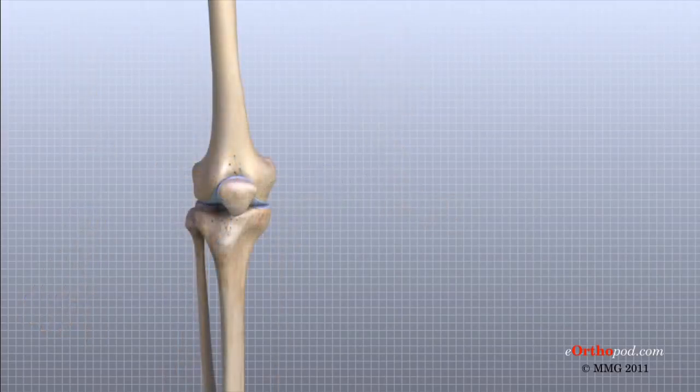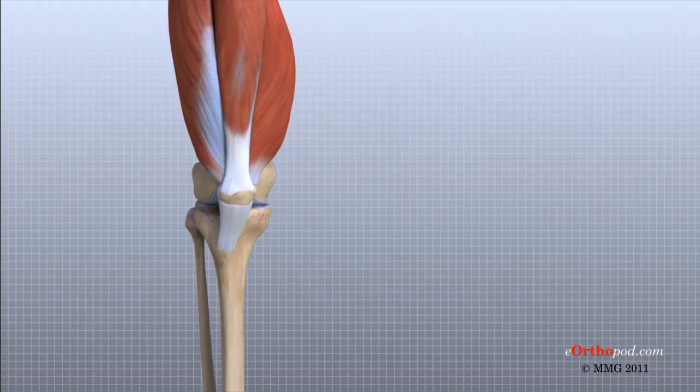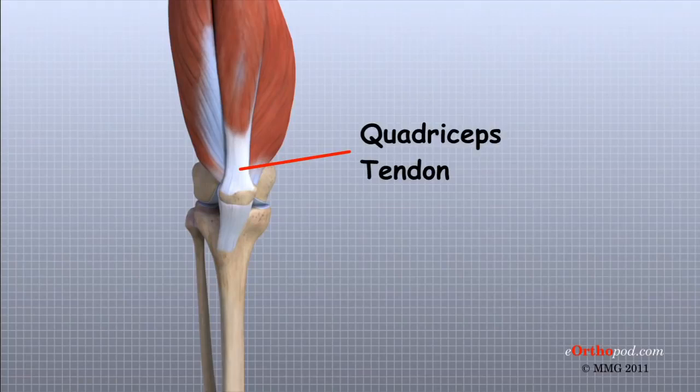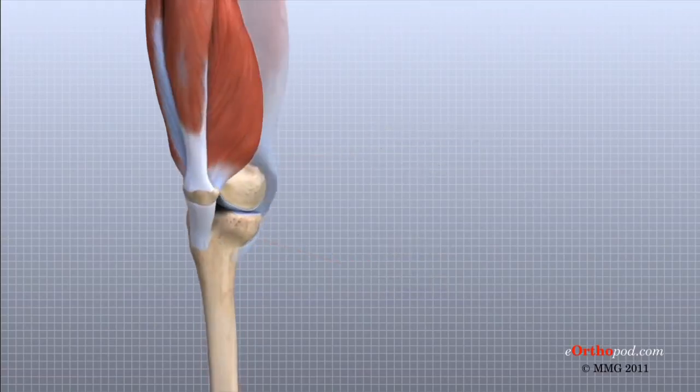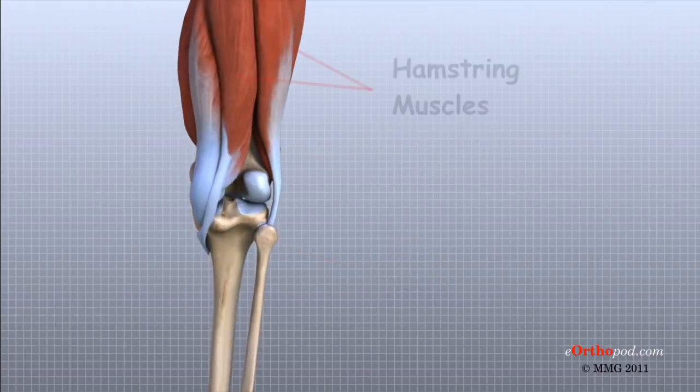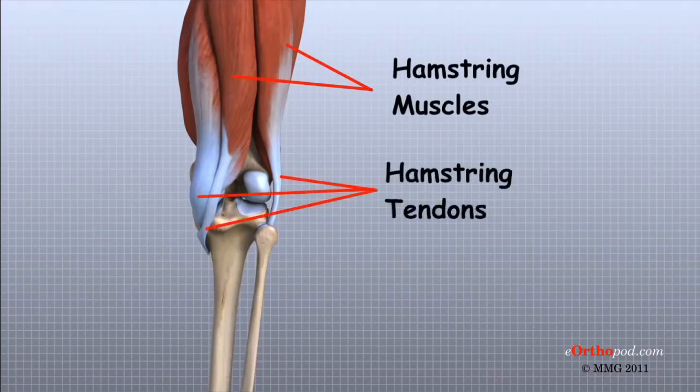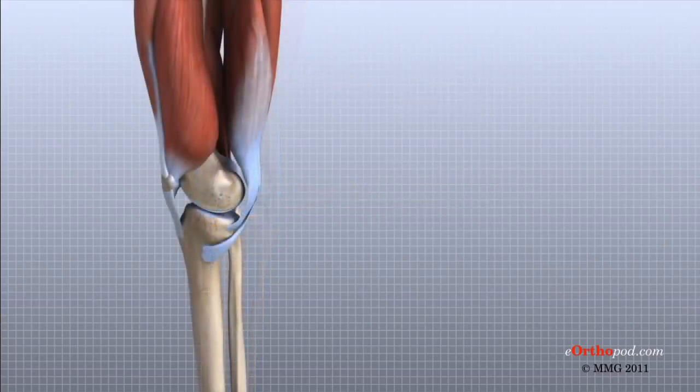Tendons are similar to ligaments, except that tendons attach muscles to bones. The quadriceps tendon connects the large quadriceps muscle of the thigh to the patella. This tendon continues across the patella, or kneecap, and blends into the patellar tendon. The patellar tendon connects the patella to the tibia. The hamstring muscles on the back of the thigh also have tendons that attach in different places around the knee joint. These tendons are sometimes used as tendon grafts to replace torn ligaments in the knee joint.